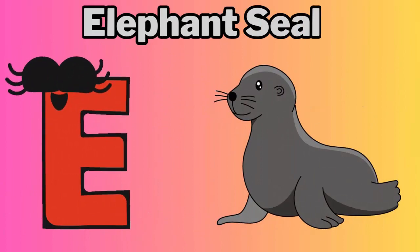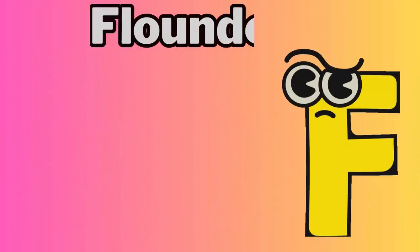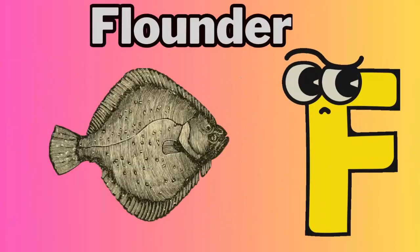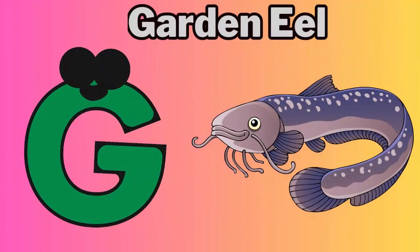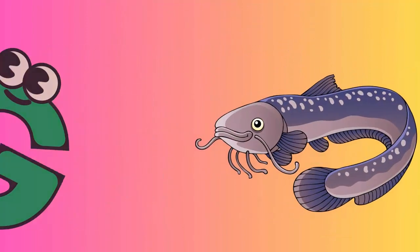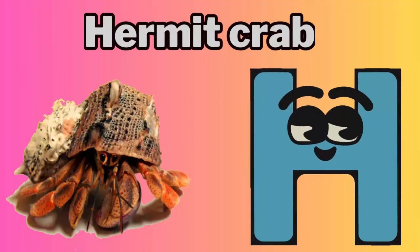E. E for elephant seal. F. F for flounder. G. G for garden eel. H. H for hermit crab.